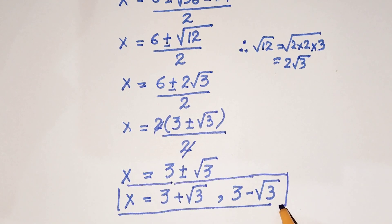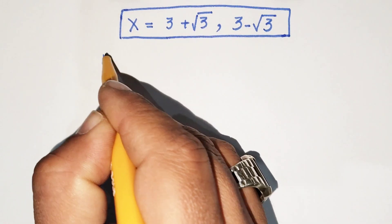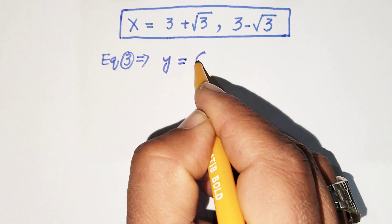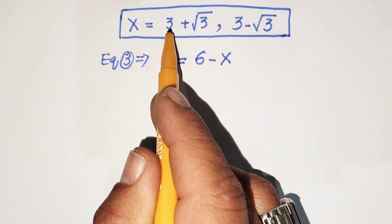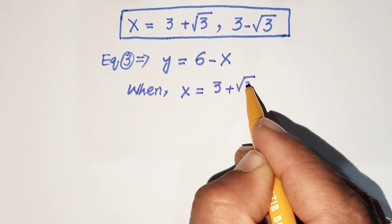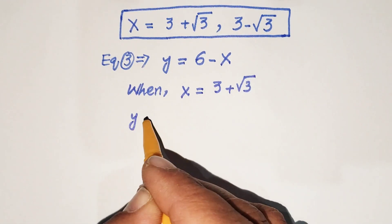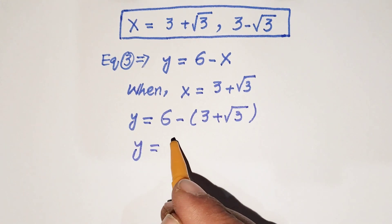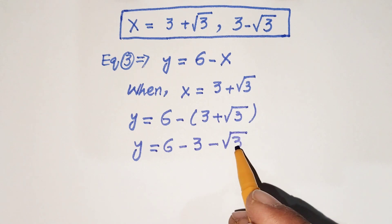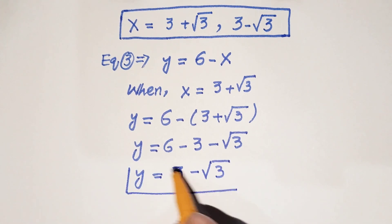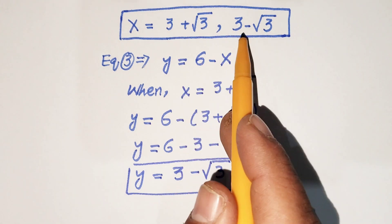Now we find the value of y by substituting each value of x into equation 3, which is y equals 6 minus x. When x equals 3 plus root 3, equation 3 gives y equals 6 minus (3 plus root 3), which equals 6 minus 3 minus root 3, so y equals 3 minus root 3. That is our first value of y.